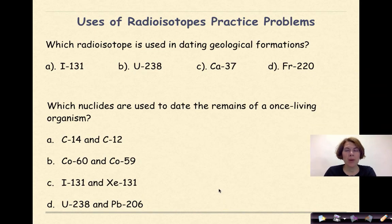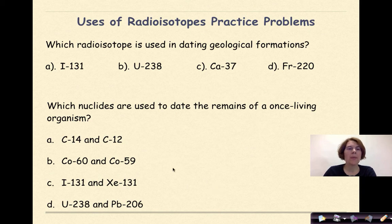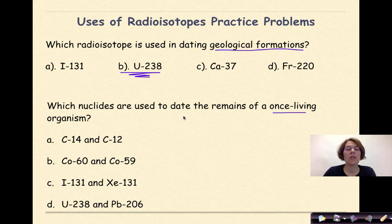Now let's do some practice problems. Read the two problems on this slide, answer them, and then check your work. Which radioisotope is used in dating geological formations? The options are iodine-131, uranium-238, calcium-37, and francium-220. The correct answer is uranium-238, which we associate with dating geological formations. Which nuclides are used to date the remains of a once-living organism? The correct answer is carbon-14 and carbon-12, because a once-living organism is going to contain carbon.